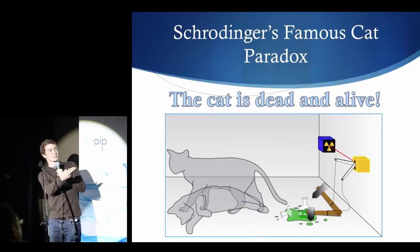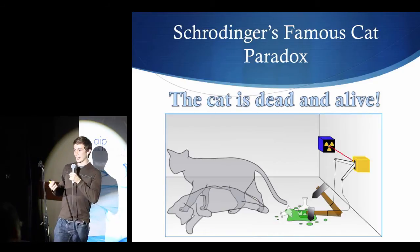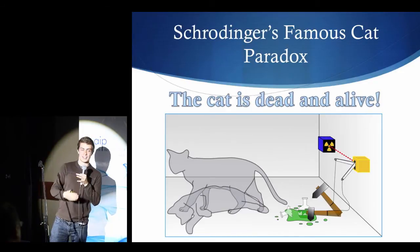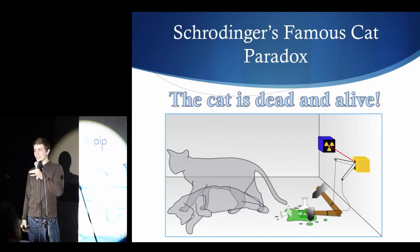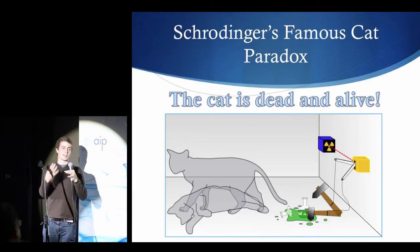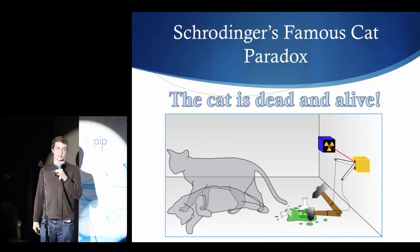Now, because the cat is entangled to this atom, i.e., the state of the atom determines the state of the cat, you could say this cat is also sort of a quantum mechanical object, even though it's big like us, you and me. It's macroscopic.